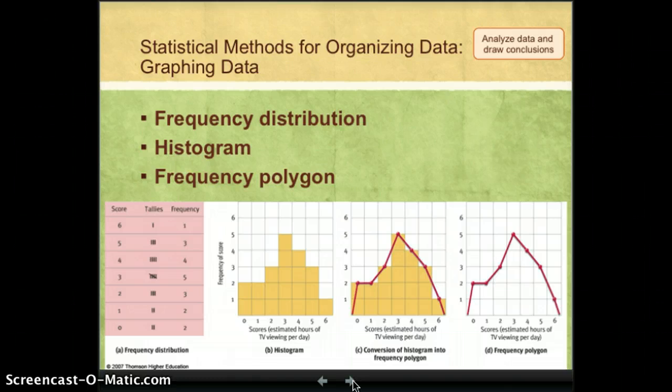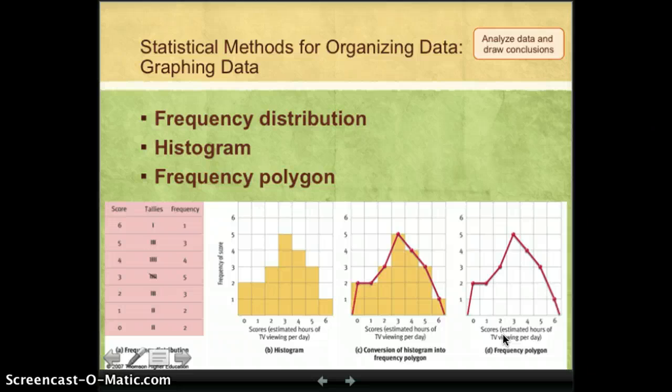We can create something called a histogram. You probably know this by a different name. You probably call it bar graph, and it's essentially the same data from the frequency distribution, only now I've got these bars. I can also create something called a frequency polygon. You may know a frequency polygon by a different name. You may call it a line graph.